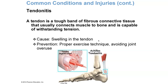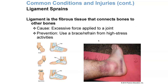A tendon is a tough band of fibrous connective tissue that connects muscle to bone and can withstand tension. A ligament connects like things — bone to bone. With tendonitis, the cause is swelling of the tendon. Prevention includes proper exercise techniques, avoiding joint overuse, and warm-up and cool-down. It can also be caused by rapid increases in training, inappropriate equipment use, or training on hard surfaces. The longer tendonitis goes untreated, the higher the potential for tendon damage.